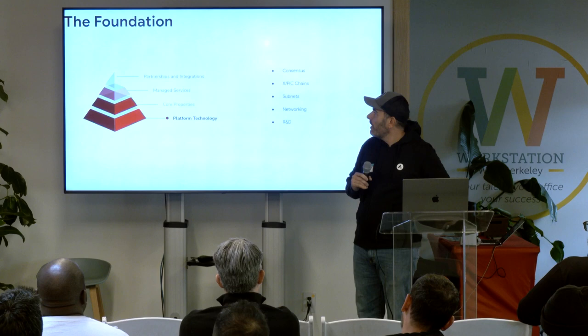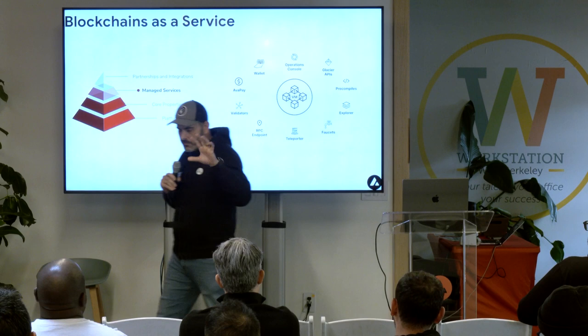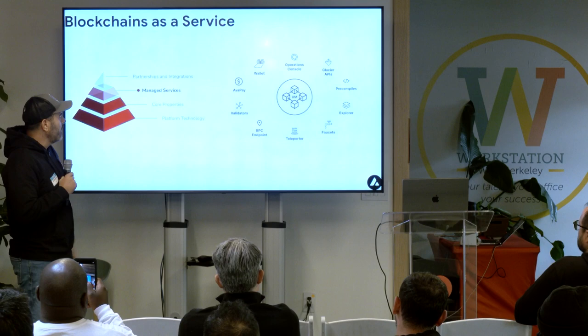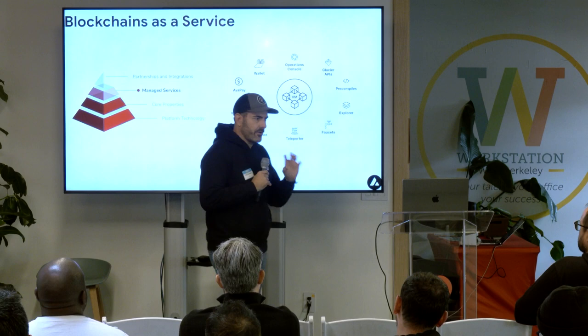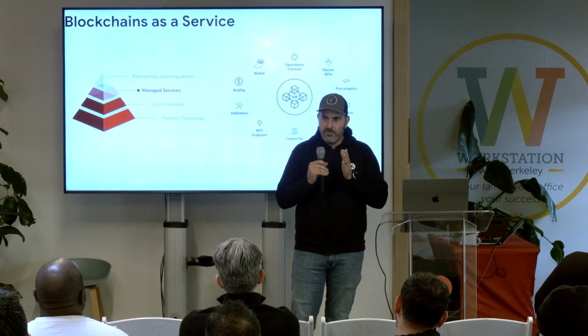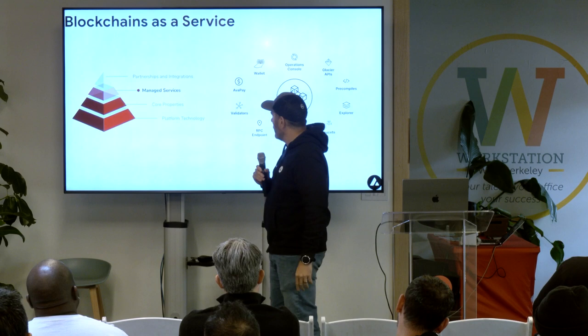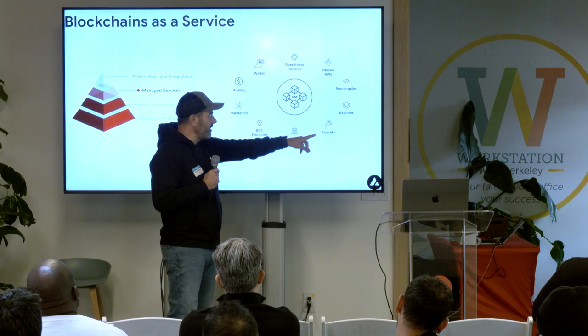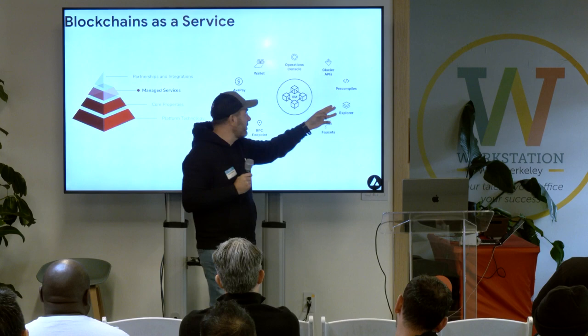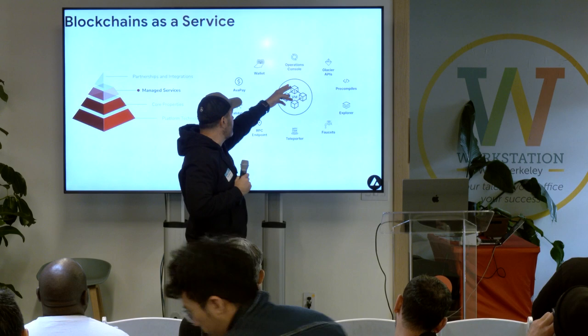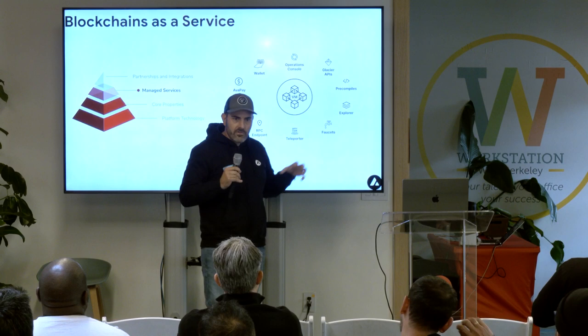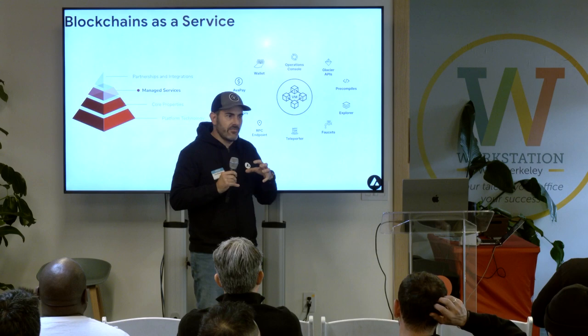So managed services. We've built all these services, all these technologies that have been skillfully built, and now we need to make them all work together and align. This is where you take your custom VM and Teleporter — our interoperability — and you need a faucet for your testnet, and you need your Explorer. You want a pre-compile library. You need data ingestion and quick retrieval of data — that's our Glacier APIs. You need an operations console so you can see how your subnet's performing. We want to take all these components, make them very easy for you to use, so you're just thinking about the underlying business application.